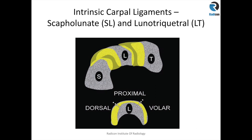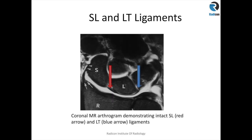The two important intrinsic carpal ligaments are the scapholunate and lunotriquetral ligaments. The scapholunate ligament has a horseshoe shape with three parts: a dorsal part, a volar part, and a proximal part. The dorsal part is the strongest part of the scapholunate ligament. Here you can see an image from a coronal MR arthrogram.